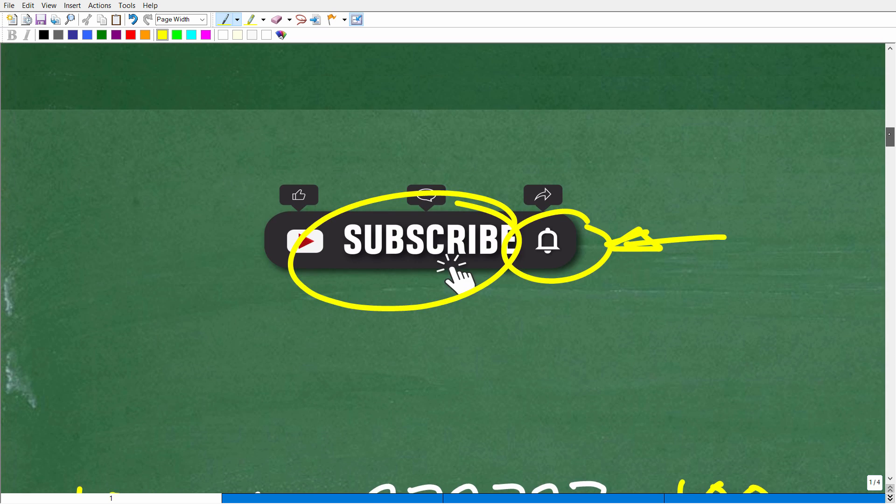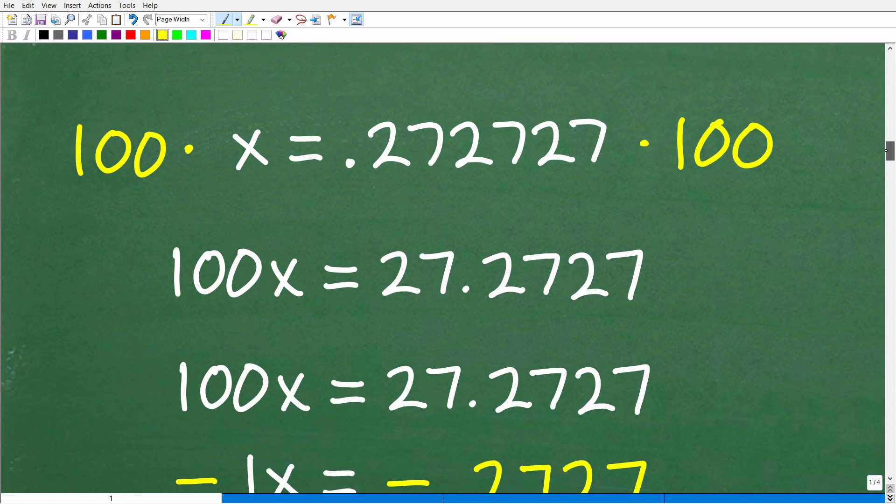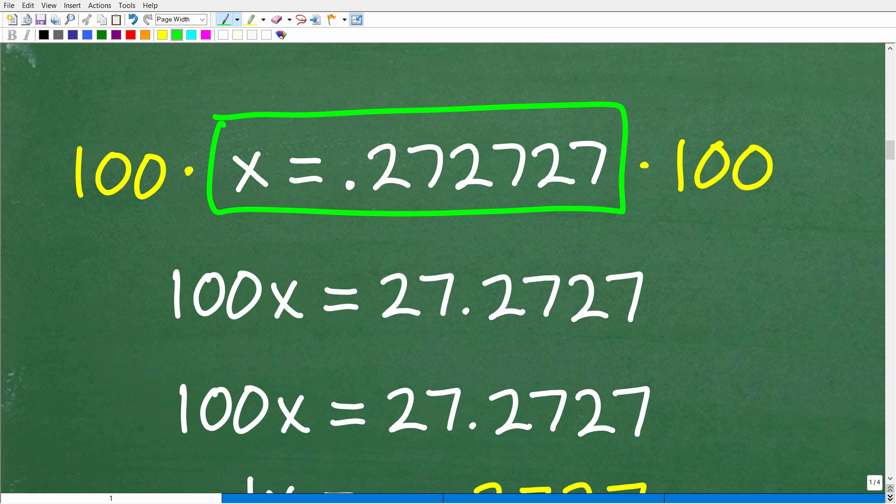So let's go back and finish up the rest of this procedure. What we're going to do here is that we looked at the decimal and we're seeing that it is finished repeating at the hundreds place. So we're going to use this value, 100, in a very creative way. We're going to take our value x = 0.272727 and multiply both sides of this equation by 100. Remember, in algebra, you can do whatever you want to an equation as long as you do the same thing to both sides.